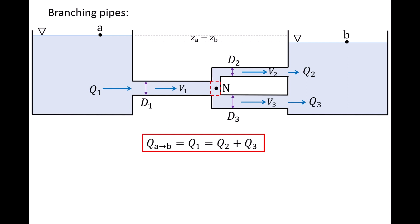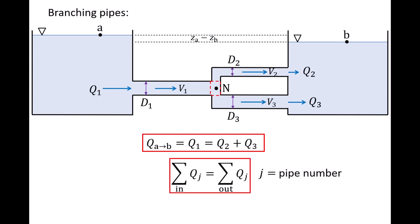We can generalize the conservation of mass equation for a case with multiple inlets and outlets: the sum of all volumetric flow rates into a node equals the sum of all volumetric flow rates out of a node, where we have replaced the pipe number with the index J.